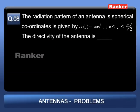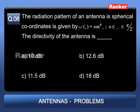Problem 8: The radiation pattern of an antenna in spherical coordinates is given by U(θ) = cos⁴θ, where 0 ≤ θ ≤ π/2. The directivity of the antenna is: Option A: 10 dB; Option B: 12.6 dB; Option C: 11.5 dB; Option D: 18 dB.